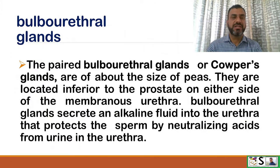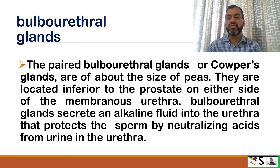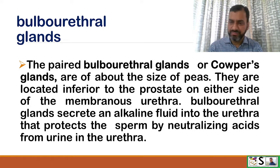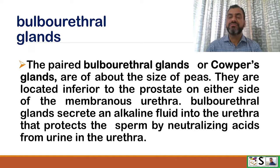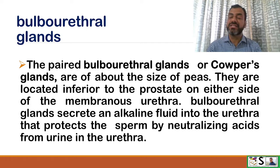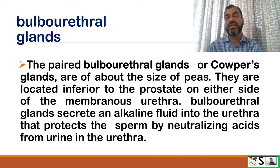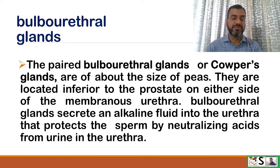The paired bulbourethral glands, also called Cowper's glands, are two pea-sized glands located inferior to the prostate on either side of the membranous urethra. They secrete an alkaline fluid into the urethra that protects the sperm by neutralizing the acids from urine remaining in the urethra.